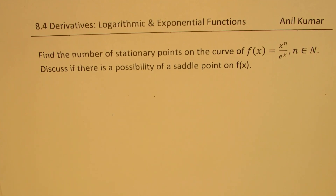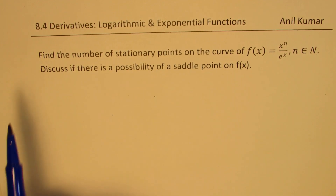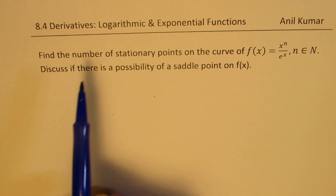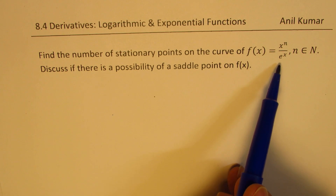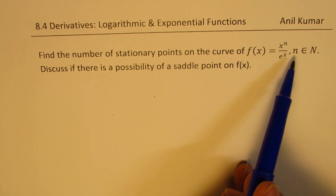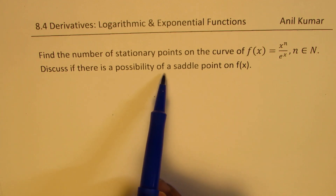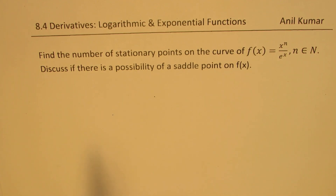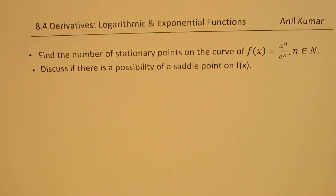Welcome to my series on calculus. In this video, we are going to understand two very important terms: stationary point and saddle point. The question here is: find the number of stationary points on the curve of f(x) = xⁿ / eˣ, where n belongs to natural numbers. Also discuss if there is a possibility of a saddle point on this function. So there are two parts to this. Let us see how to answer such a question.